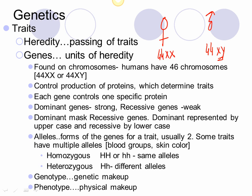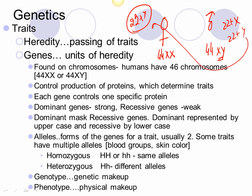When gametes are formed, the female gamete will always be 22 plus X — that's the only possible combination. In the male, it could be 22 plus X or 22 plus Y. That's why when the Y meets the X, you get a boy, and when X meets X, you get a girl. So the father determines the sex of the child.